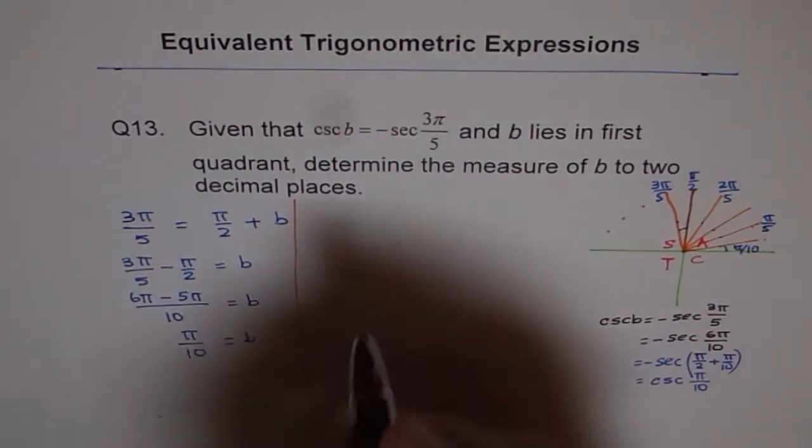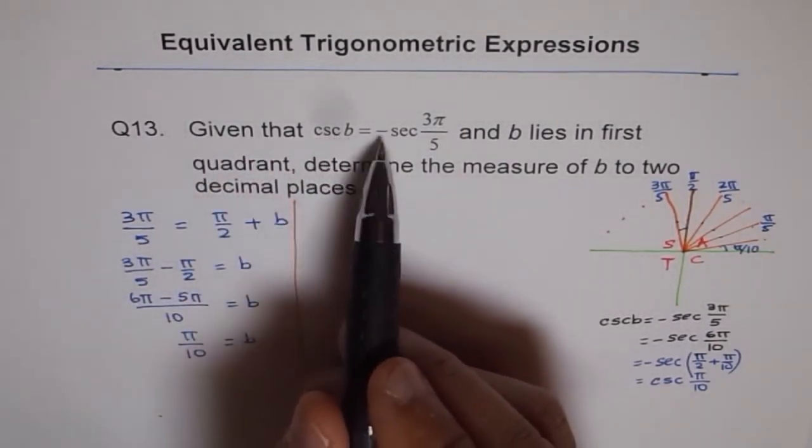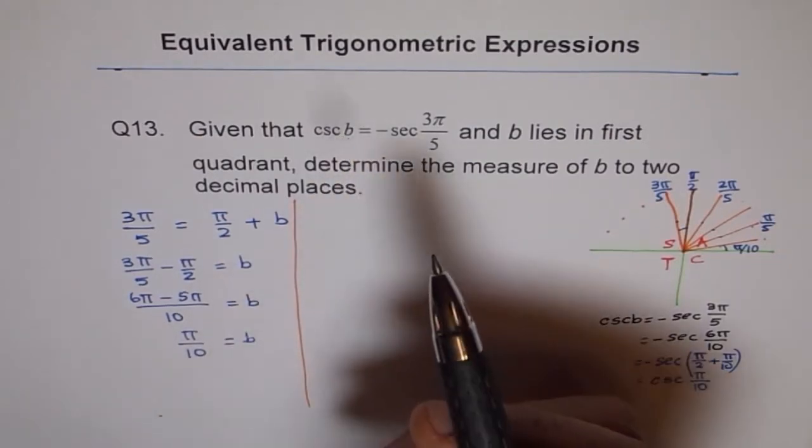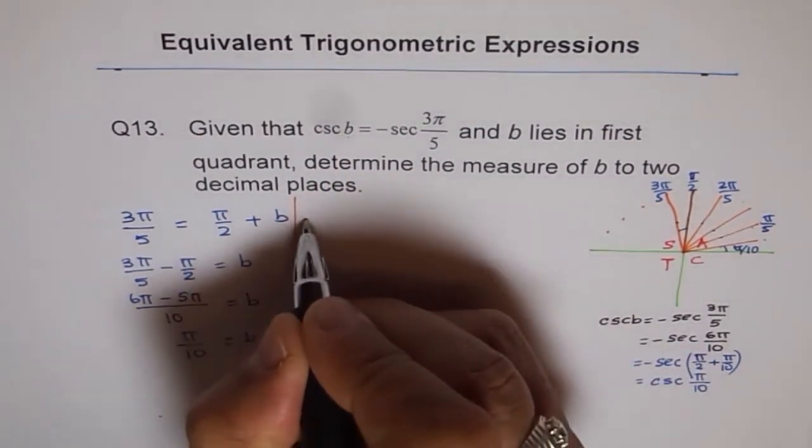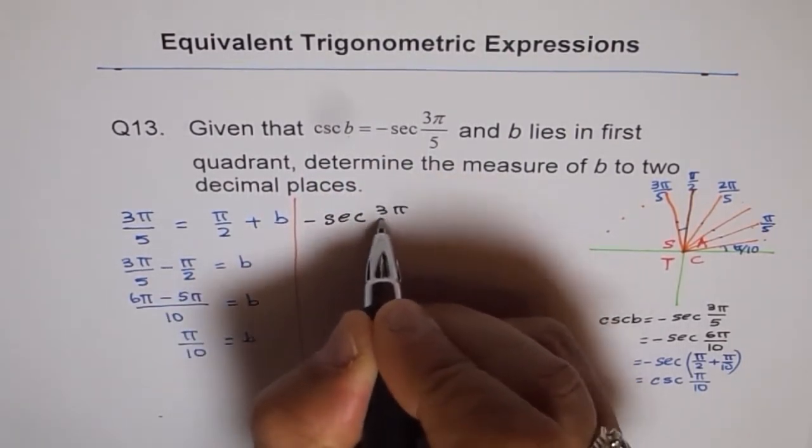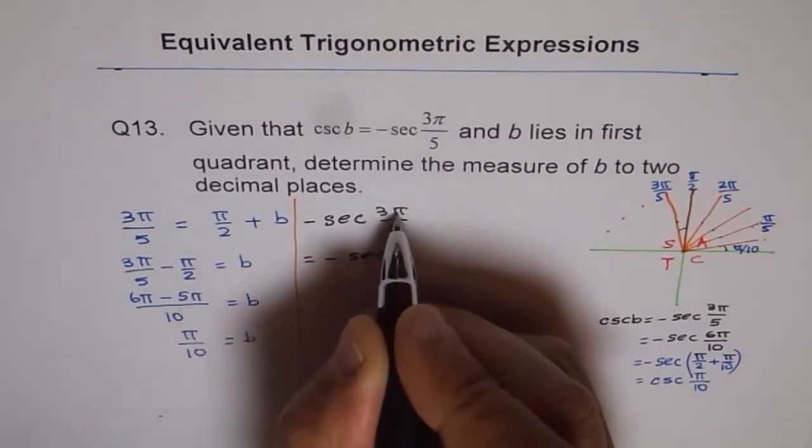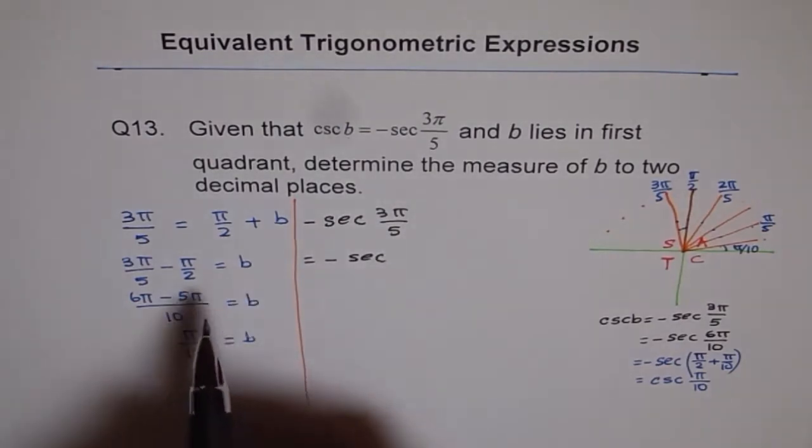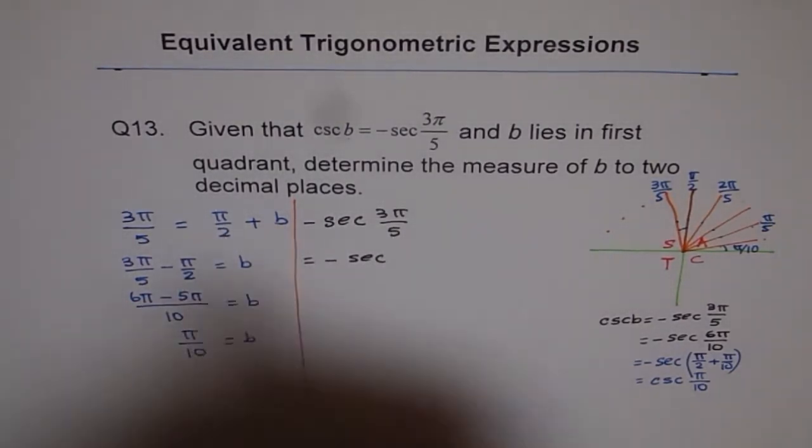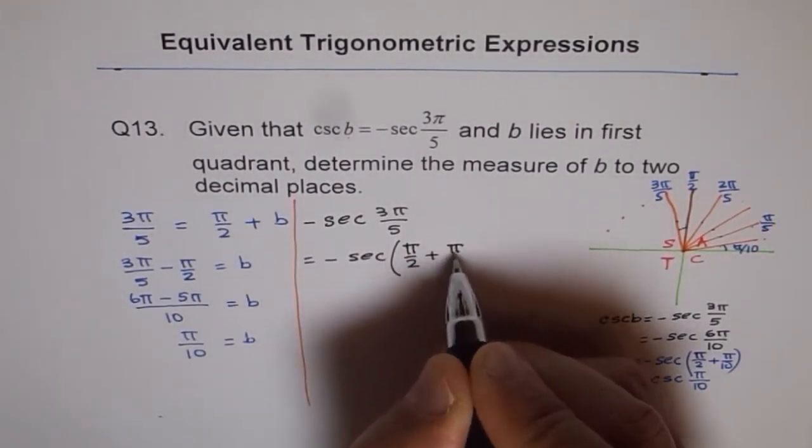Now let's go ahead with the question. What is the question here? We are given that cosecant B equals to this. So what is B? This is what we want to find. We know we can write this starting from the right side, secant of 3π/5 is actually equals to minus secant of, instead of 3π/5, now I can write π/2 plus π/10. Since B is π/10. So I will write this as π/2 plus π/10.